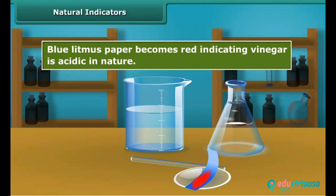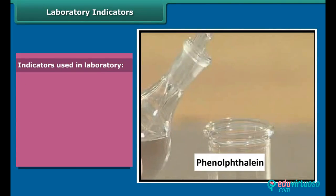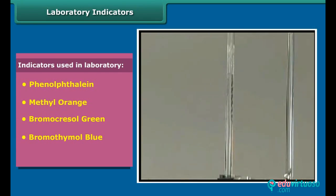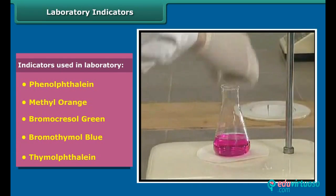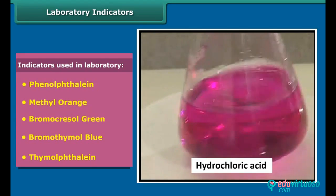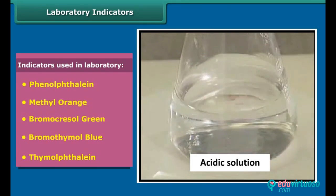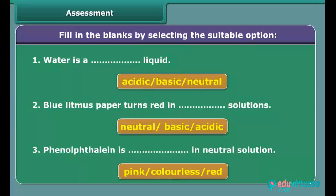Let us perform a simple experiment. Take some hydrochloric acid in a beaker, then add some phenolphthalein to it. Now add sodium hydroxide drop-wise to this solution with continuous stirring. After some time, a pink color slowly appears in the solution. When more sodium hydroxide is added, the pink color becomes brighter. On adding a drop of hydrochloric acid, the solution again becomes colorless. So phenolphthalein appears pink in alkaline solution and colorless in acidic or neutral medium.